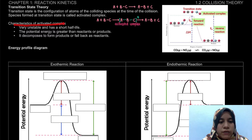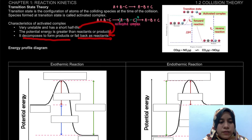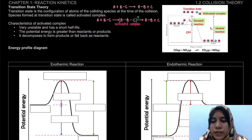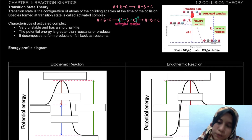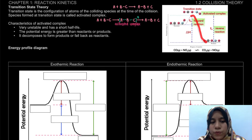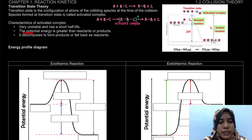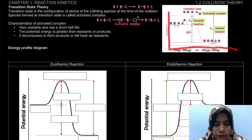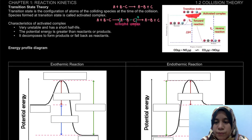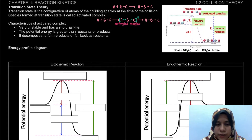The characteristics of the activated complex are that it is very unstable and has a short half-life. Because it has a short half-life, it either decomposes to form the product or falls back to reform the reactant. Its potential energy is greater than that of the reactant or the product. On the energy profile diagram, the peak — the highest point — is what we define as the transition state.